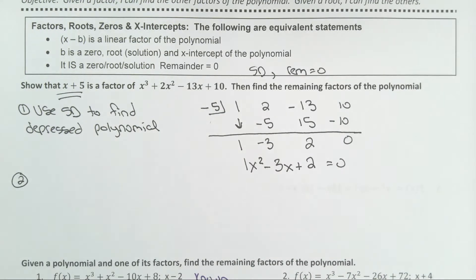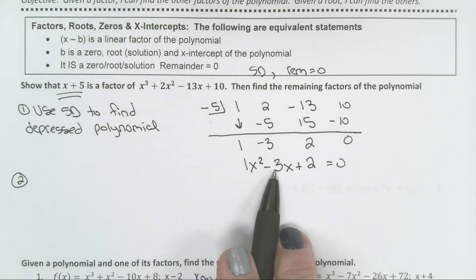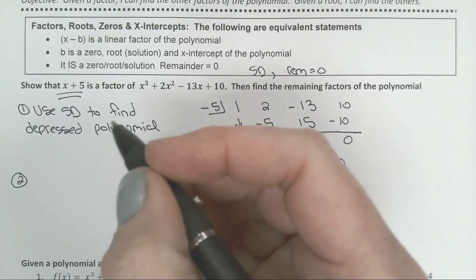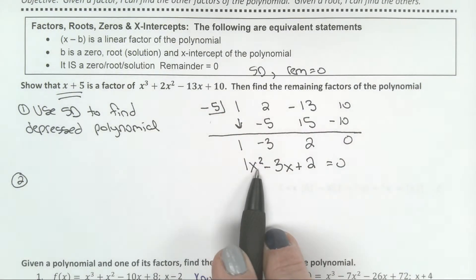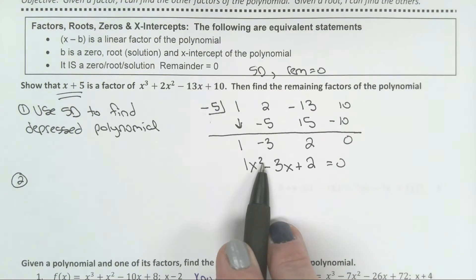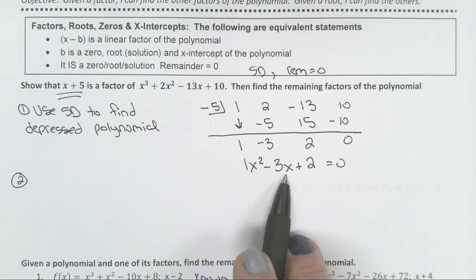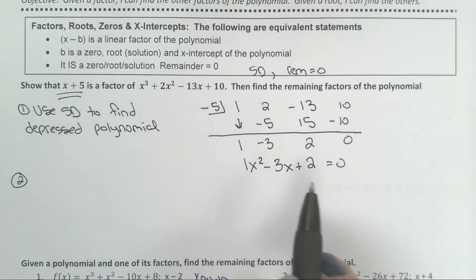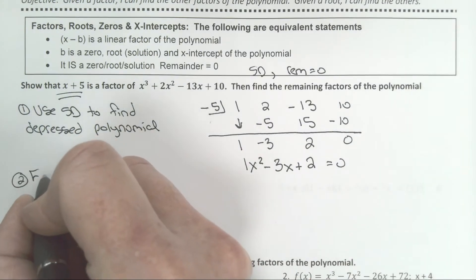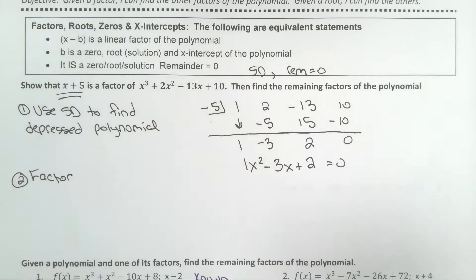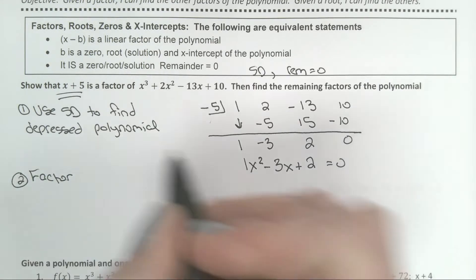Step number 2: I'm going to take this new polynomial, and once you have it down to a quadratic, you have two choices. You can either factor to solve, or you can use the quadratic formula. That one looks like it factors, so I'm going to factor it.